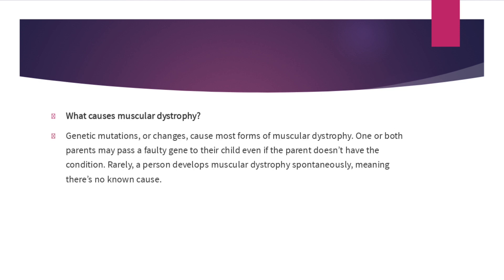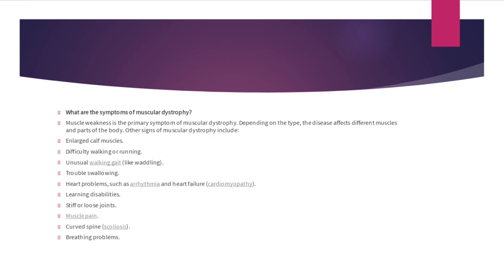Genetic mutations or changes cause most forms of muscular dystrophy. One or both parents may pass the faulty gene to a child even if the parent doesn't have the condition. Rarely, a person develops muscular dystrophy spontaneously, meaning there is no known cause.